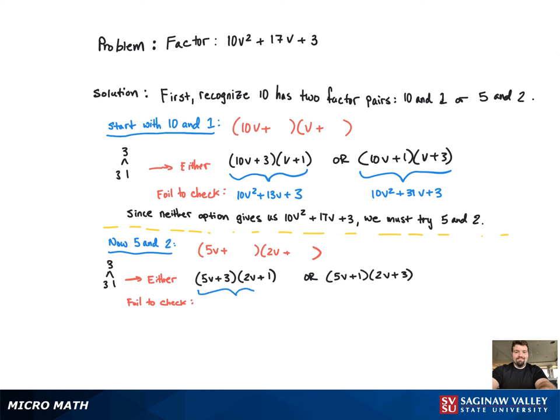So when we start FOILing, the first one gives us 10v² plus 11v plus 3. And the second one, we get our answer, 10v² plus 17v plus 3. So we can see that the correct factoring is 5v plus 1 times 2v plus 3. And that's it.